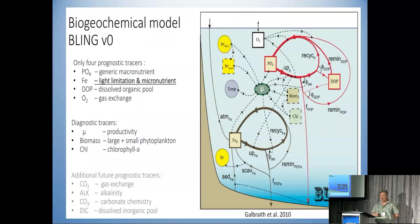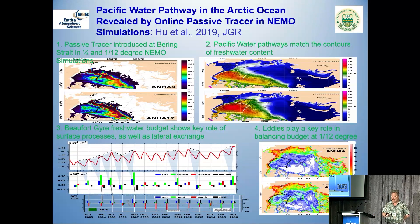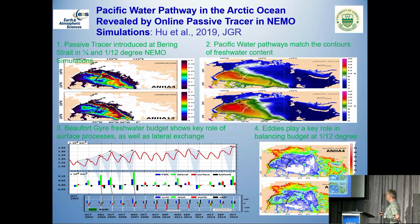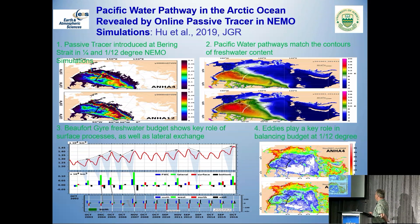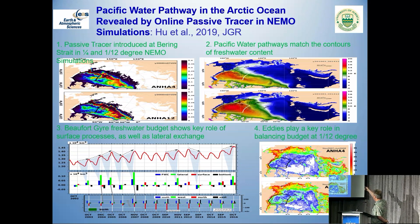There have been several talks already this week about the Beaufort Gyre. We were really looking at the Pacific water inflows. We took twin experiments — one-quarter and one-twelfth degree — and looked at how the Beaufort Gyre structure expanded and changed. You can see two pairs of figures looking at the structure of the freshwater content. There's a passive tracer associated with the Pacific water. This is an accumulation of passive tracers coming out of the Pacific water, and we find that as the freshwater enters the gyre and builds up, the main pathways of the currents, especially the transpolar drift, are aligned with those contours of freshwater content.